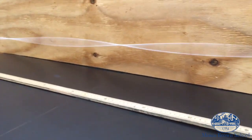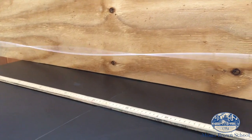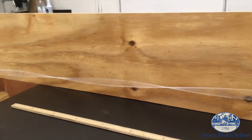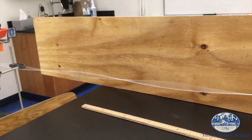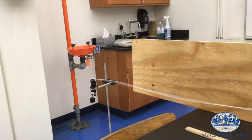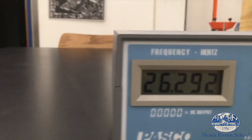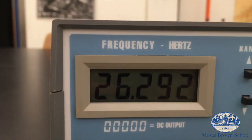Now it's a really big amplitude and the node has moved from where it was before. Now if we look at the length of the string we have 1, 2, 3, 4 anti-nodes instead of 5. And the new frequency is 26.3 Hertz.